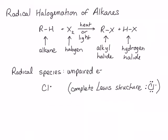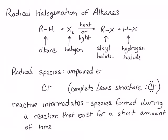Radicals are electron deficient because they don't have a complete octet. They are very reactive, and because they're so reactive, they don't last very long. Species that are generated during a reaction and exist for some finite but short amount of time are called reactive intermediates. The term reactive intermediate is often shortened just to intermediate, but they mean the same thing. In radical halogenation reactions, the reactive intermediate is a radical species.